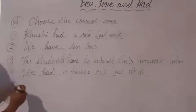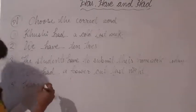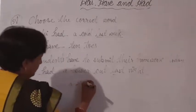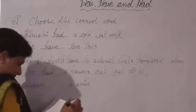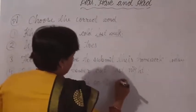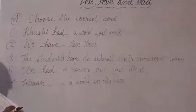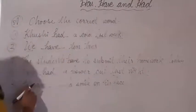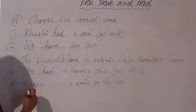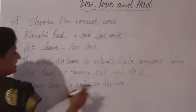Fifth: 'Current has a smile on his face.' There is no past indicator here, so we choose from has or have. Current is a singular subject, so we write has. Current has a smile on his face.